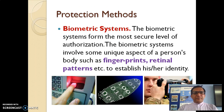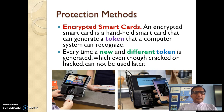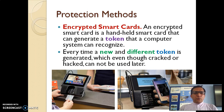Authentication validates the user as authentic. The next method is the biometric system, which is the most secure level of authorization, where fingerprints or retinal patterns of an individual are used to establish identity. Third is encrypted smart cards — handheld cards that can generate a token like an OTP, a one-time password, that a computer system can recognize.